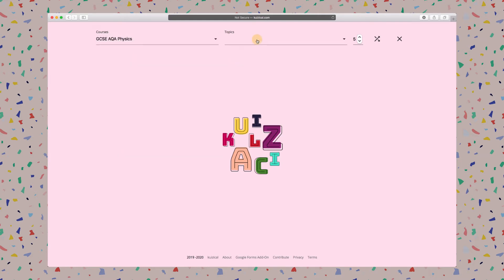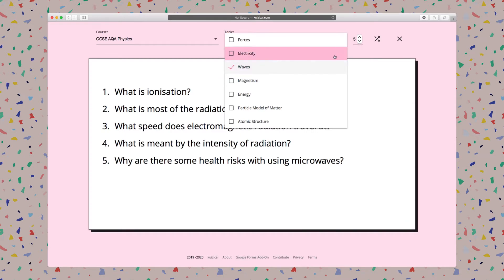Then I select a topic. Let's say I would like Waves. There we go, questions automatically generated straight away. The default number of questions in this case is five.